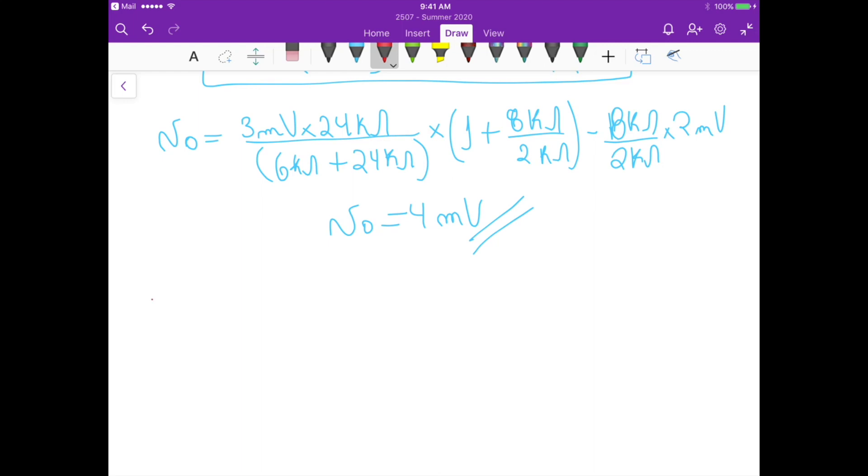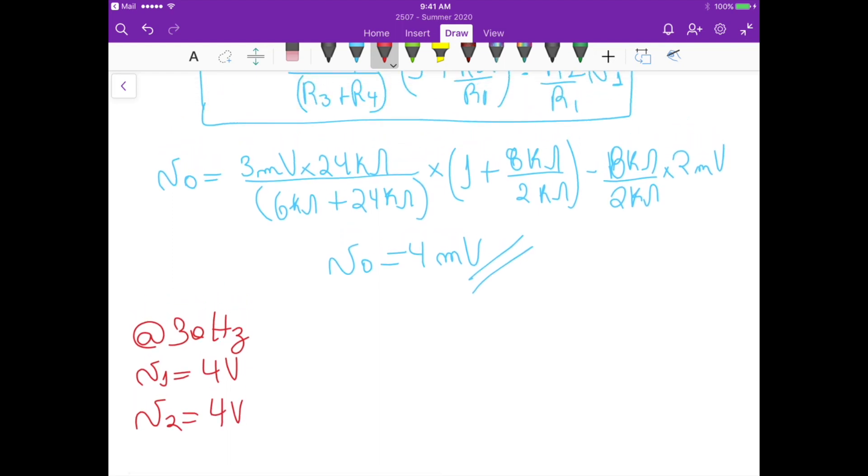So at 30 hertz, we have V1 equals to 4 volts and V2 equals to 4 volts. So if we just change the values of the voltages here and here by 4 and 4, you will see that Vout at 30 hertz is equals to 0 volts, they basically cancel each other.